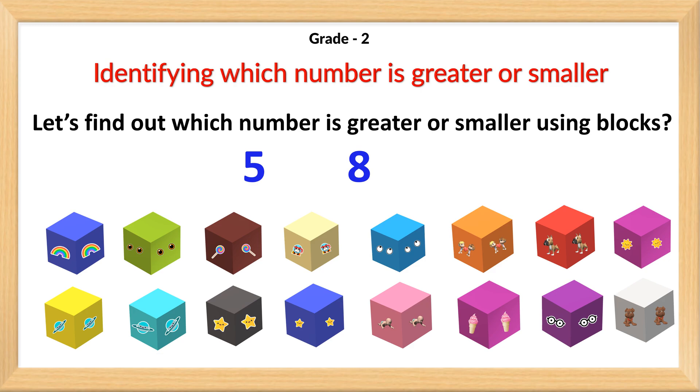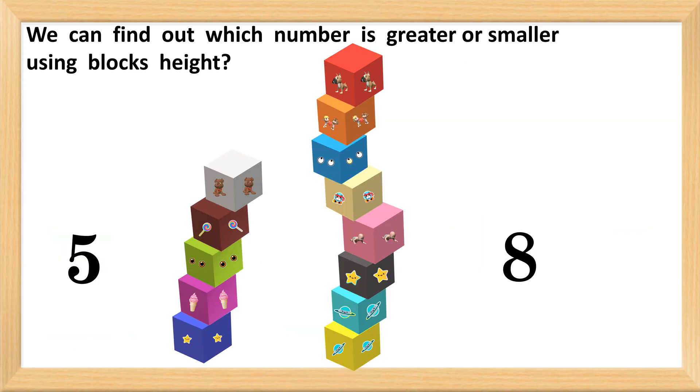Identifying which number is greater or smaller. Let's find out which number is greater or smaller using blocks. We can find out which number is greater or smaller using blocks height. The pile for the greater number is taller than the pile for the smaller number. Then the pile with 8 is taller, so 8 is the greater number. And the pile with 5 is shorter, so 5 is the smaller number.